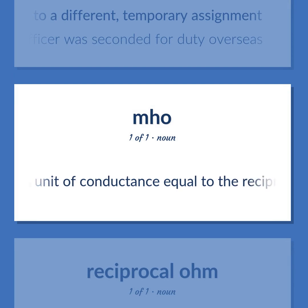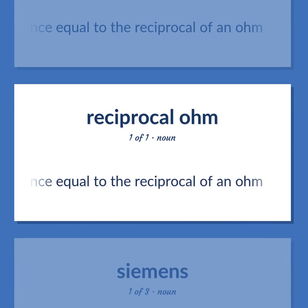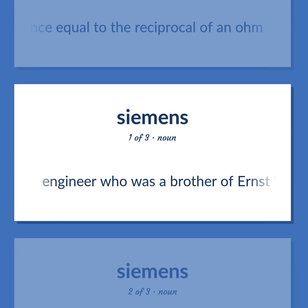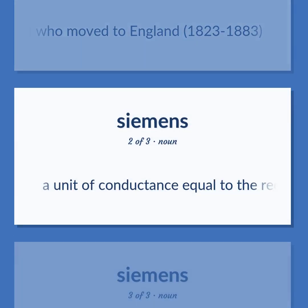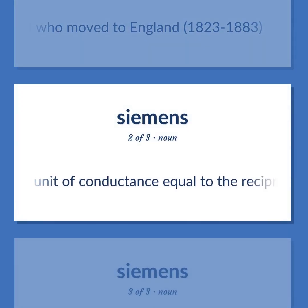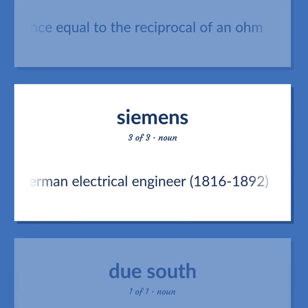A unit of conductance equal to the reciprocal of an ohm. Named after the engineer who was a brother of Ernst Werner von Siemens and who moved to England (1823–1883), and after the German electrical engineer (1816–1892).